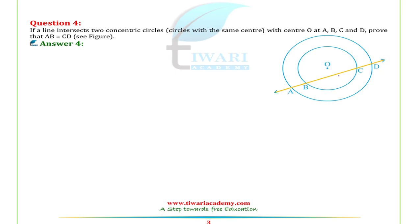You can see that A, B, C, D are the points. Point A is on the larger circle, point B is on the smaller circle. This is the common center O for both circles.